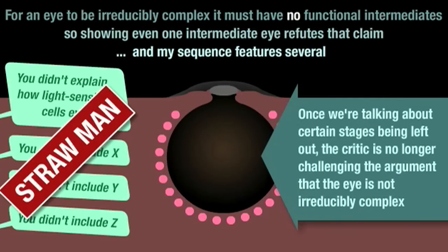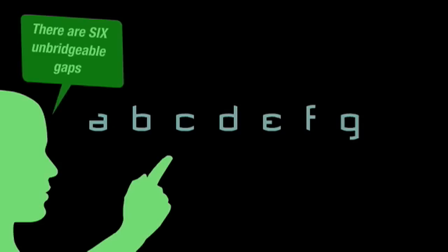But this is a common tactic from some anti-evolutionists, who declare an unbridgeable gap between A and G, and then when you find five intermediates, declare the six new gaps unbridgeable. One person laid bare the impossible levels of detail so often demanded, declaring evolution unreal because we can't produce a video of a real eye evolving in real time.